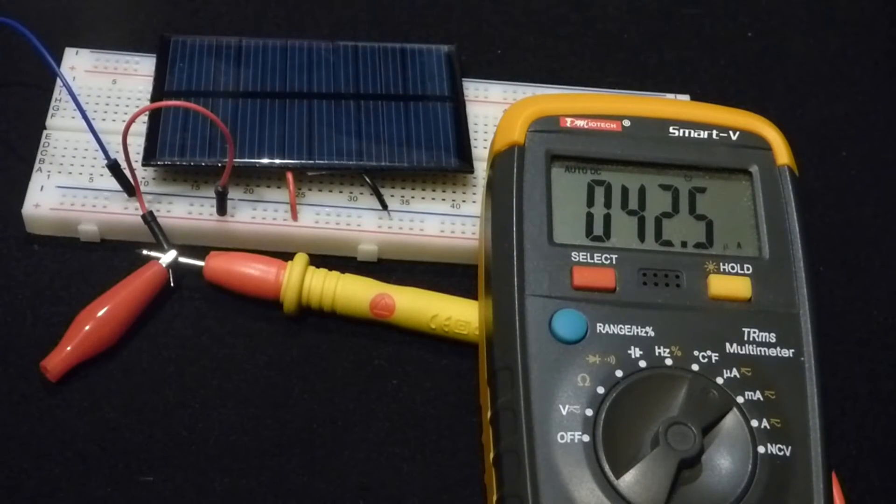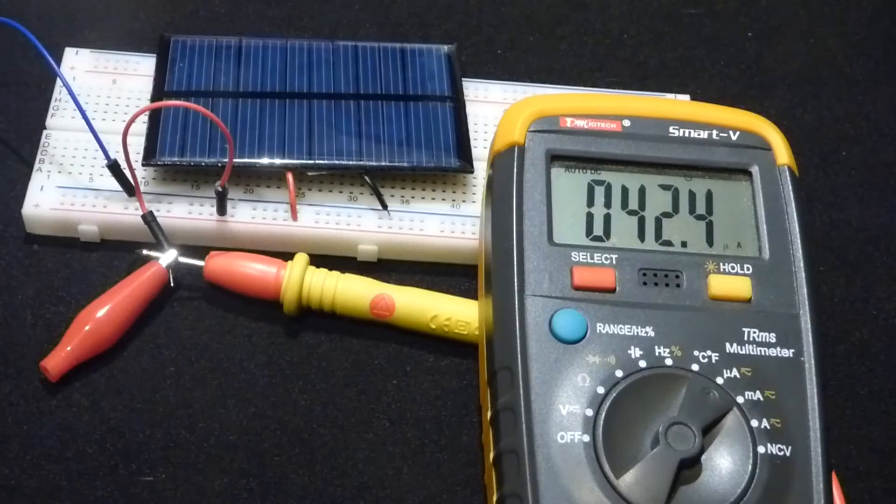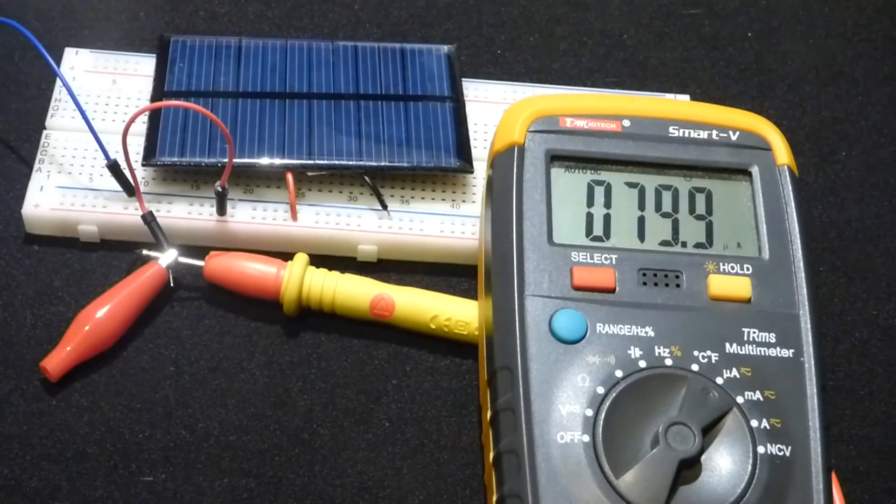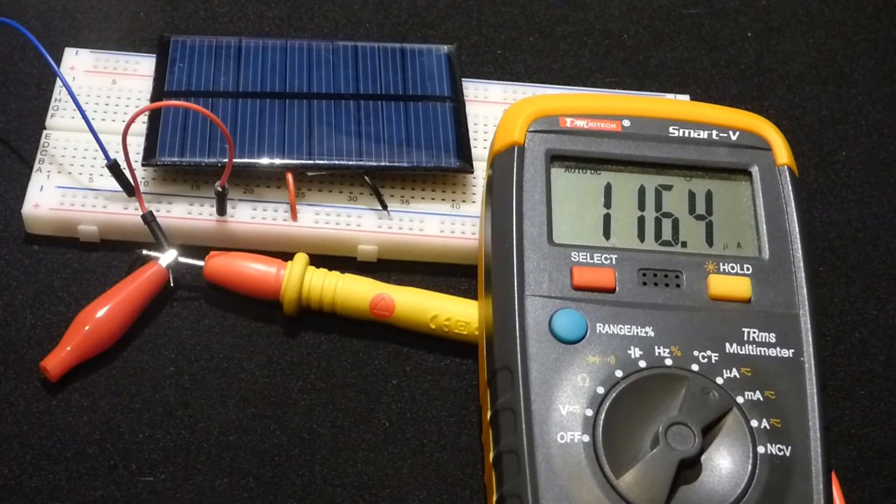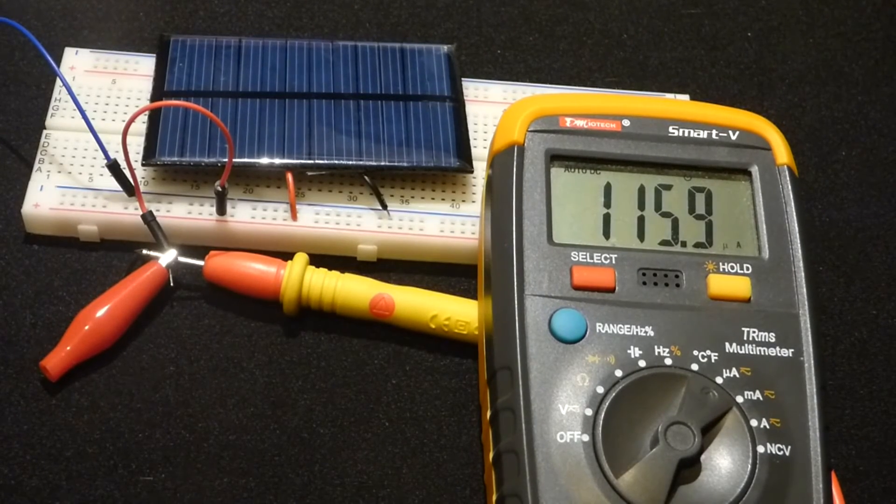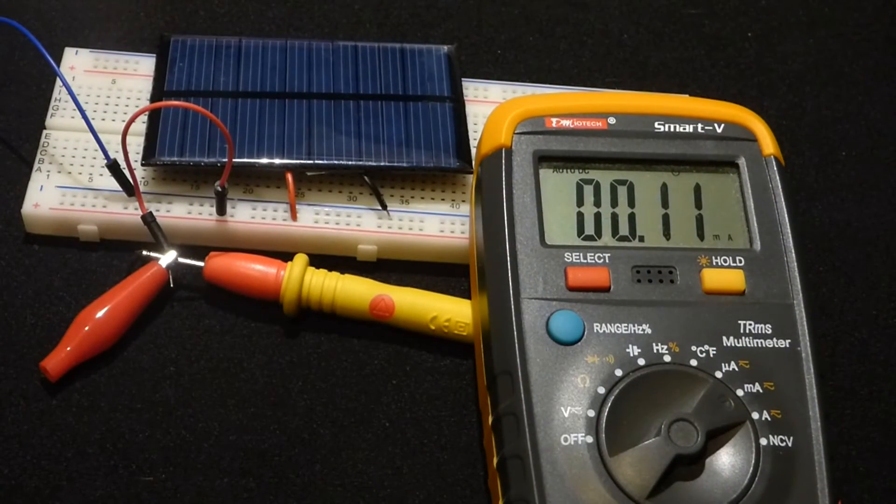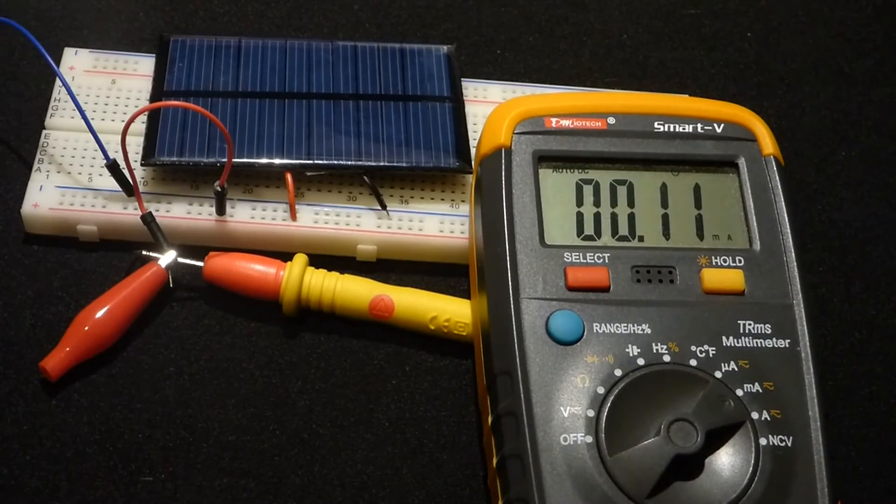But now you can see when I turn the lamp on, we get up to about 42 microamps. 79 microamps. Now I turn it to the brightest lamp setting. Now we're getting about 116 microamps. So that's 0.11 milliamps, about one tenth of a milliamp.